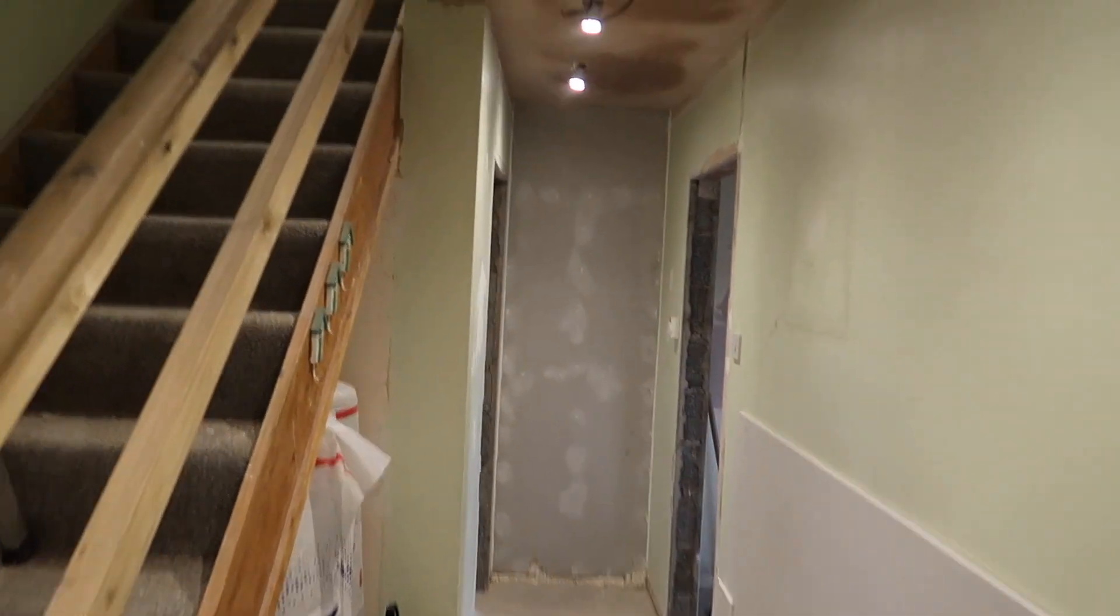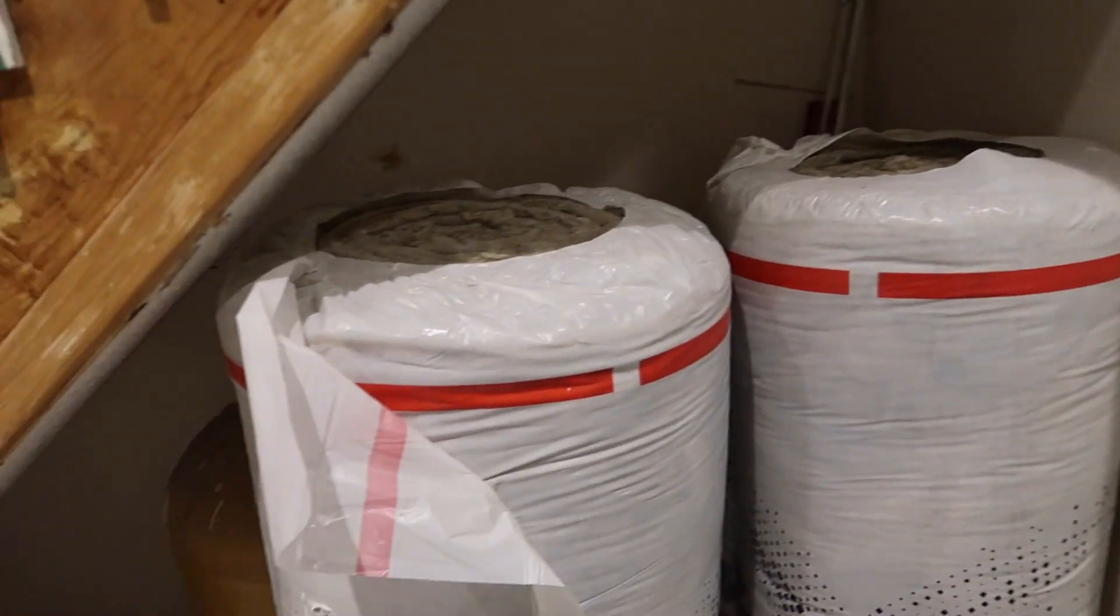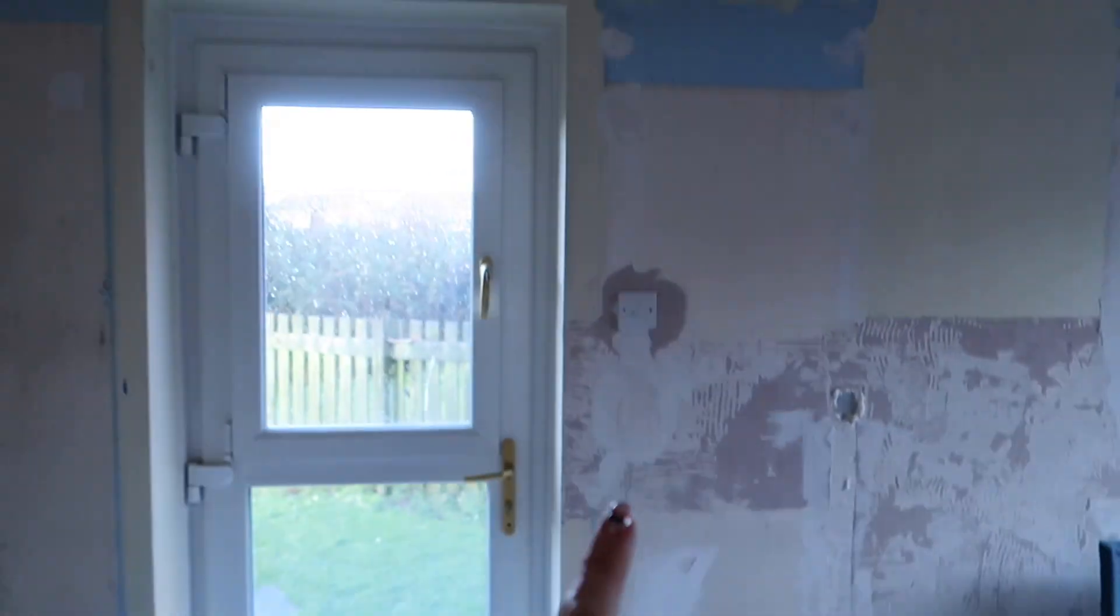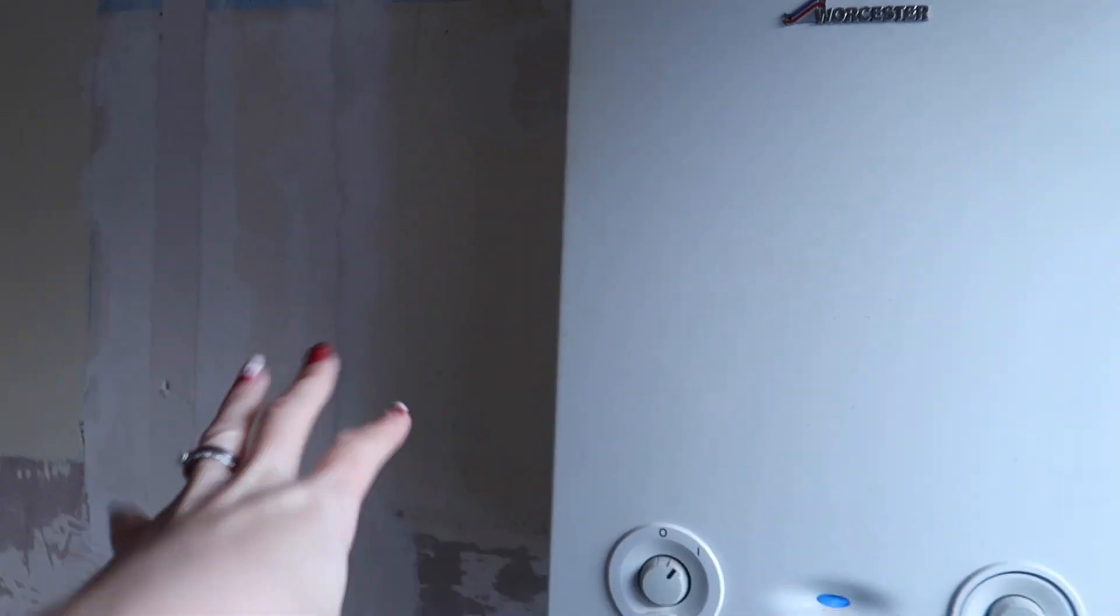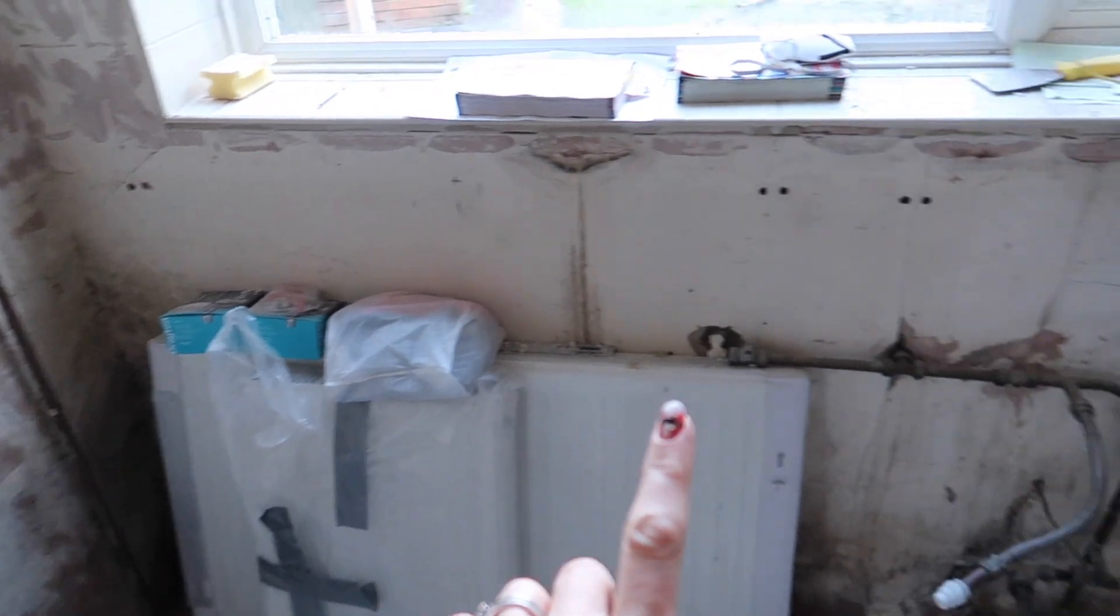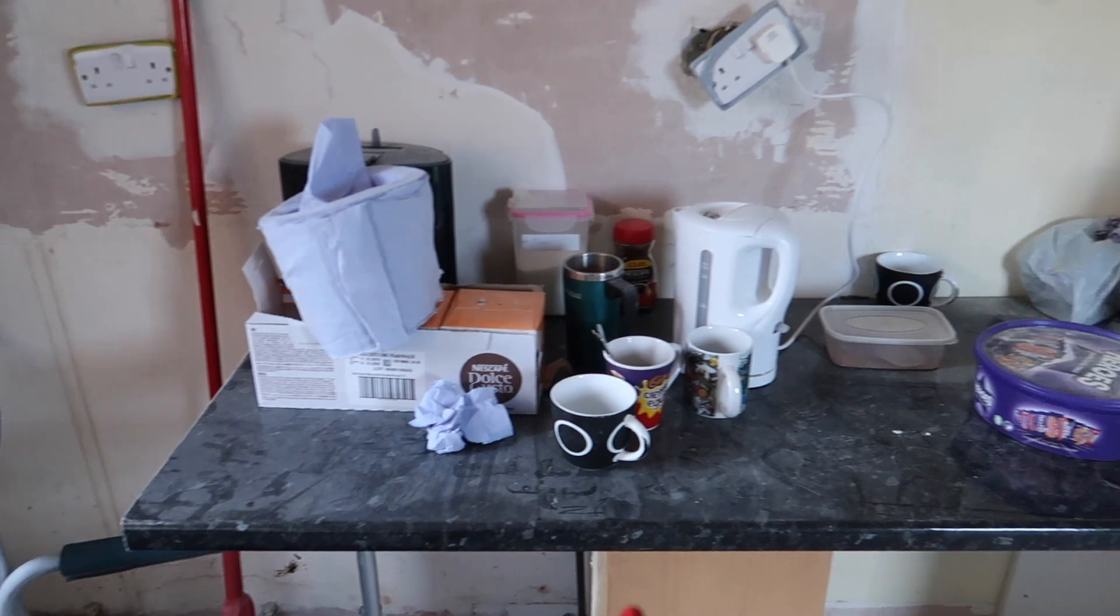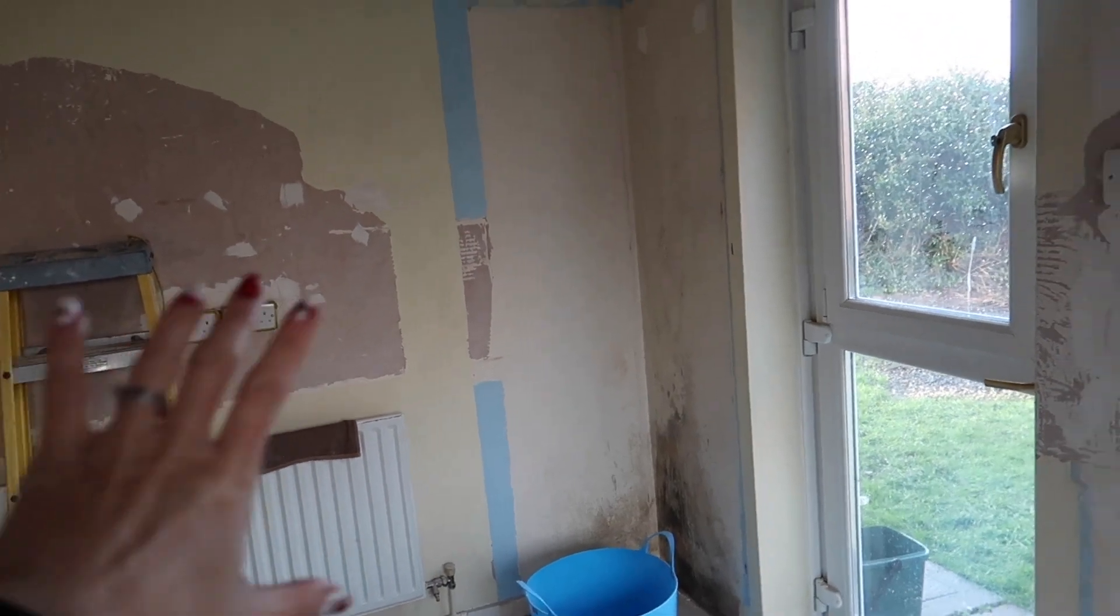So moving through the nice bright hall now, this is all going to be cupboards and various things, but that's a later-on kind of project. In what will be my office, the ceiling is done, the spots are in, very exciting. So the boiler is going to stay here, but we're going to put like a kitchen cupboard thing around it so I don't have to look at it. Around here there's going to be blinds, and around here is going to be some form of desk, maybe some kind of sofa in here.